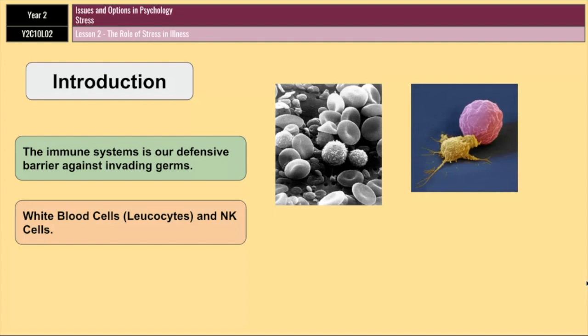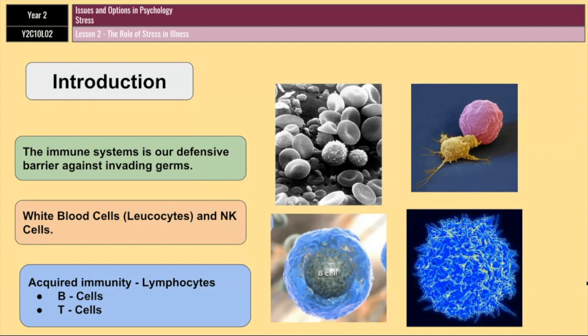The second line of defense is called acquired immunity. Acquired immunity is specific to the invading antigen in question, because our body knows what that antigen is as it has encountered it before. This acquired response involves things called lymphocytes, which destroy specific antigens. You've got things called B cells that produce antibodies, and various types of T cells.